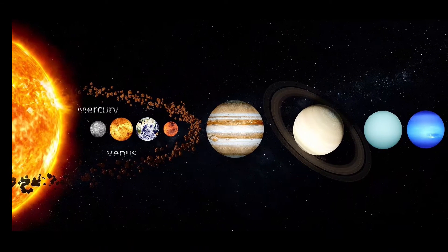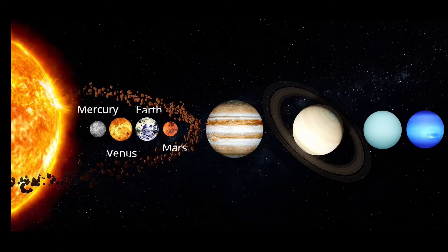Mercury, Venus, Earth and Mars orbit the Sun in a region called the inner solar system.